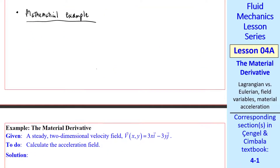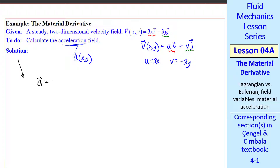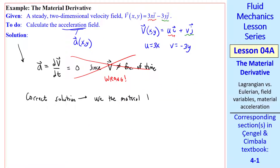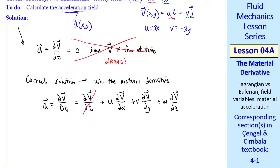Now for a mathematical example. Suppose we're given a steady two-dimensional velocity field v of x, y with two components: u equals 3x and v equals negative 3y. We want to calculate the acceleration field, which will also be a function of x and y. The uninformed student will look at this velocity field and say v is not a function of time, so the acceleration is zero — but this is not true. The correct solution is to use the material derivative: a equals Dv/Dt, expanded as ∂v/∂t plus u(∂v/∂x) plus v(∂v/∂y) plus w(∂v/∂z). Since the flow is steady, the local or unsteady acceleration is zero. Since this is 2D, w and changes with z are also zero.